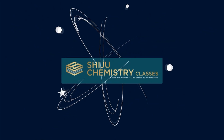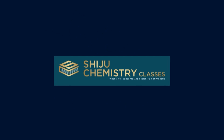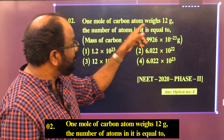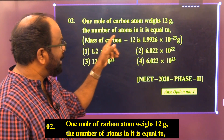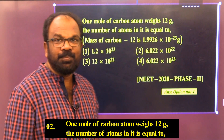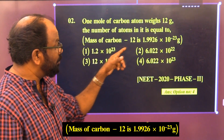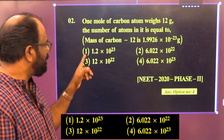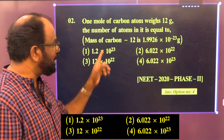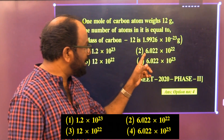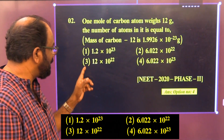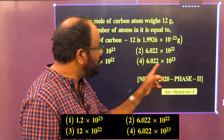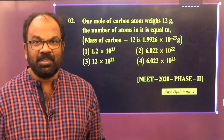Question 2: One mole of carbon atoms weighs 12 grams. The number of atoms in it is equal to — given that the mass of one C-12 atom = 1.9926 × 10⁻²³ g. Option 1: 1.2 × 10²³. Option 2: 6.022 × 10²². Option 3: 12 × 10²². Option 4: 6.022 × 10²³.